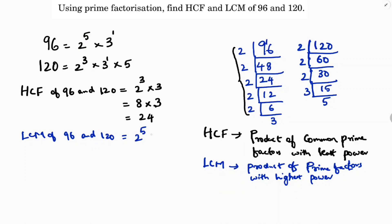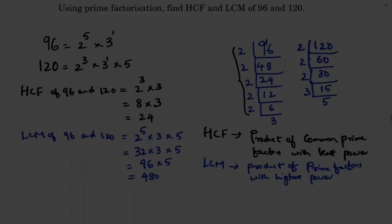So LCM is 2 power 5 into 3 into 5. Now 2 power 5 is 32, and 32 into 3 is 96, and 96 into 5 is 480. So LCM is 480 and HCF is 24.